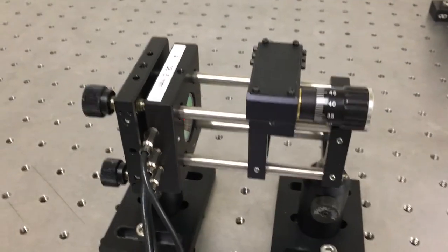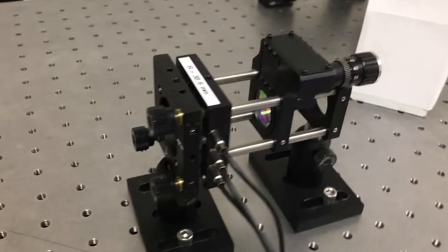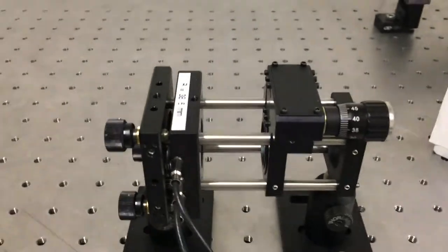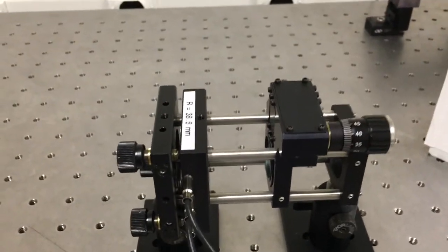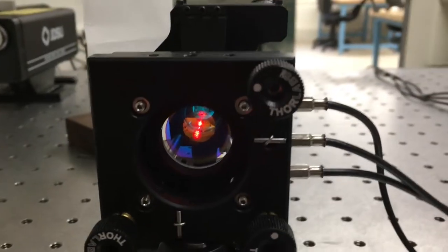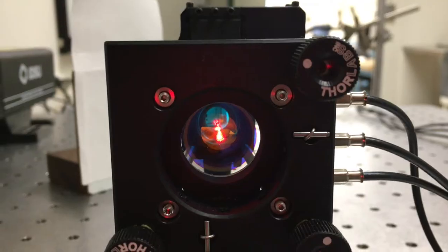So this is called the confocal configuration. The mirrors are not 100% reflective. They only reflect 97 or 98%, so about 2 or 3% of the light can get through the back of the mirror and enter into the cavity. We're actually sending light into the cavity through the back mirror.